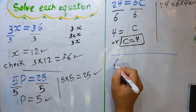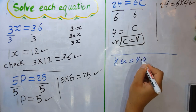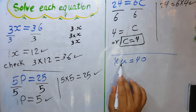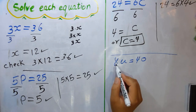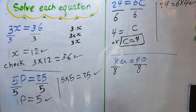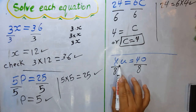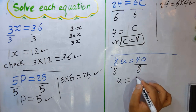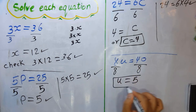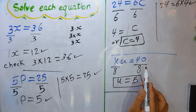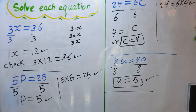Next: 8u = 40. We remove 8 by dividing both sides by 8. Eight divided by 8 is 1, so we write u only. Then 40 ÷ 8 = 5. The solution is u = 5. Check: 8 × 5 = 40. Correct!